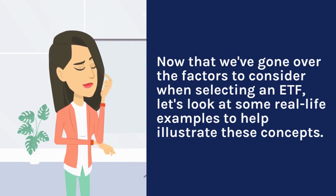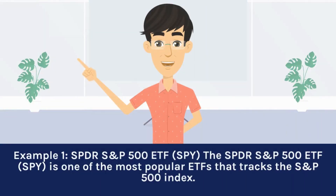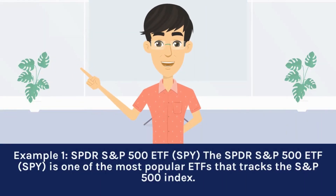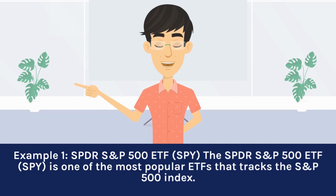Now that we've gone over the factors to consider when selecting an ETF, let's look at some real-life examples to illustrate these concepts. Example one: the SPDR S&P 500 ETF, ticker SPY. The SPDR S&P 500 ETF is one of the most popular ETFs and tracks the S&P 500 index.